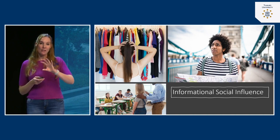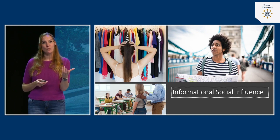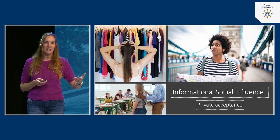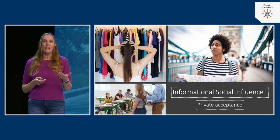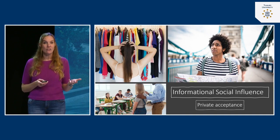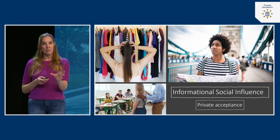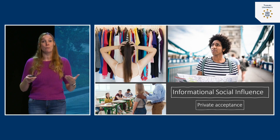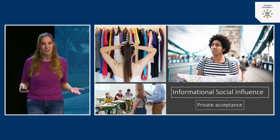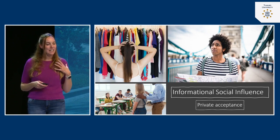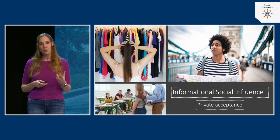When we rely on others for information — using informational social influence — we are most of the time accepting the message they're sending out. We conform because we genuinely believe that what others are doing is correct behavior. This is called private acceptance: you conform your behavior to others because you really believe this is what you should be doing. You accept the message and follow the herd.